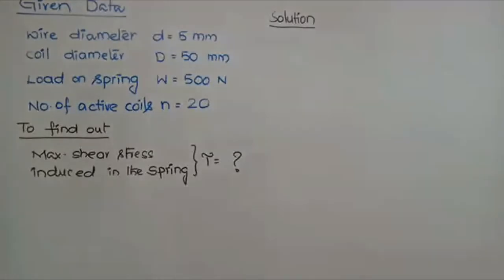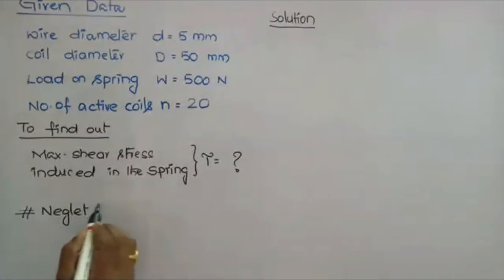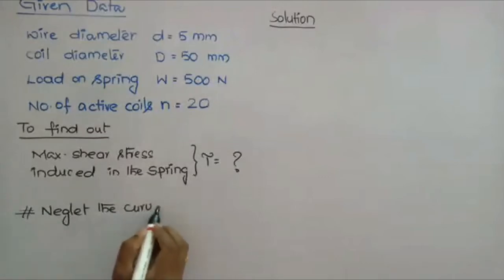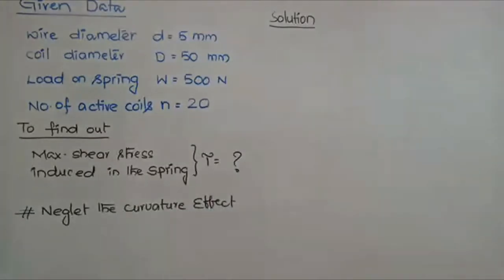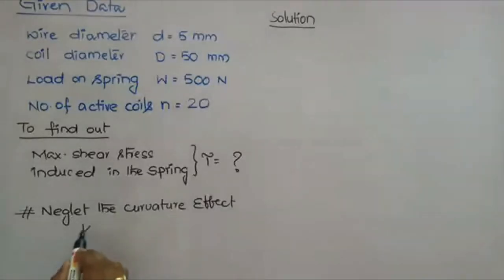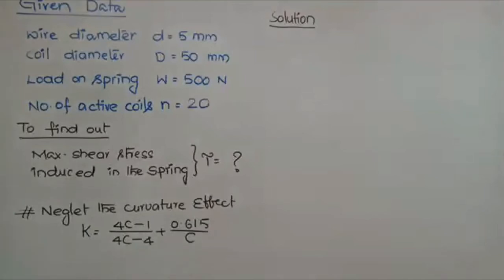It is given that the curvature effect is neglected. If we consider the curvature effect, you need to consider the Wahl stress factor: K is equal to (4C−1)/(4C−4) plus 0.615/C. This is the factor you need to consider if the curvature effect is taken into consideration.